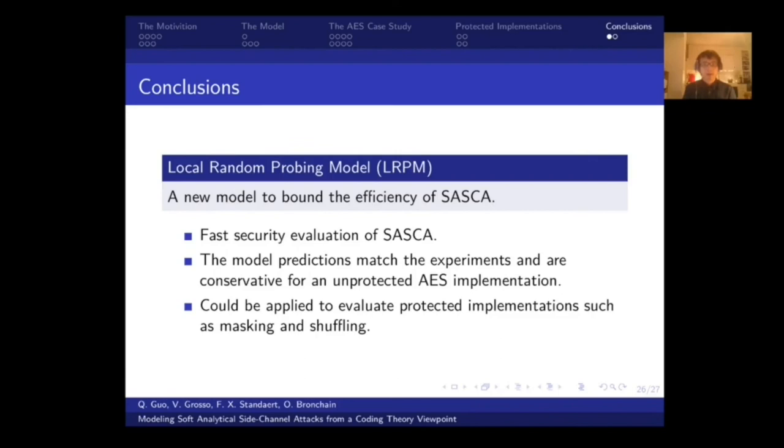So we conclude our work. We have proposed a new model called Locally Random Probing Model, LRPM, to bound the efficiency of SASCA. This model allows fast security evaluation of SASCA. This model predictions match the experiments and are conservative for an unprotected AES implementation. This model could be applied to evaluate protected implementations, such as masking and shuffling. Actually, this model has been applied in some recent papers. We hope that this research could shed light on the systematic study of combined countermeasures against nearly worst-case SASCA. Thank you.